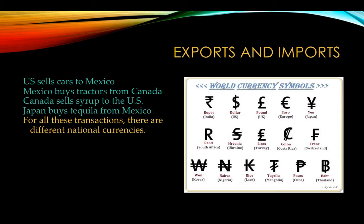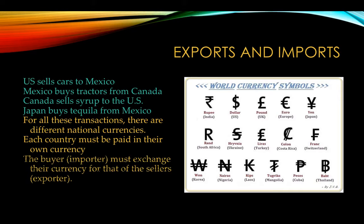Each country wants their own currency. Japan does not want pesos — they want yen. And so in order to make this happen, each country must get the currency of the other country. The buyer, the person importing the goods, must exchange their currency for the currency of the seller or the exporter. And this is happening all over the world, all the time, between countries — they're exchanging currencies so they can trade with each other.